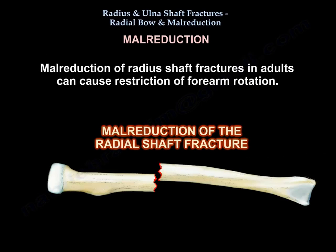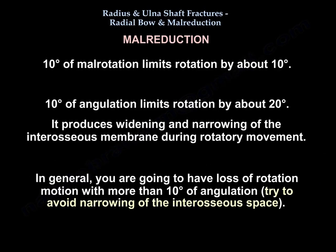Mal-reduction of a radial shaft fracture in an adult can cause restriction of forearm rotation. Ten degrees of mal-rotation limits rotation by about 10 degrees, and 10 degrees of angulation limits rotation by about 20 degrees. This produces widening and narrowing of the interosseous membrane during rotatory movement. In general, more than 10 degrees of angulation causes loss of motion, so try to avoid narrowing of the interosseous space.